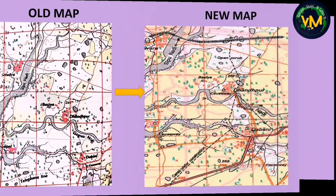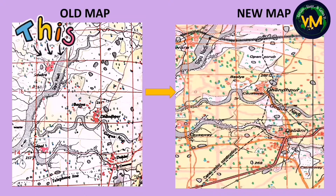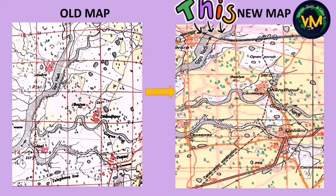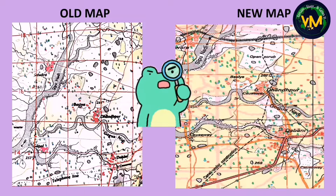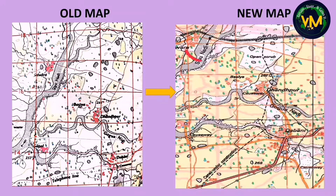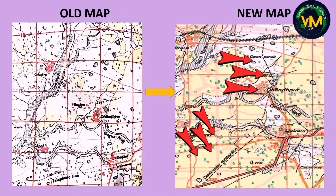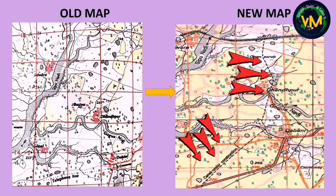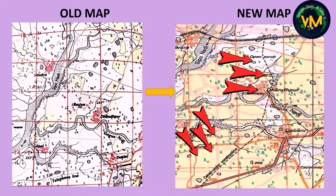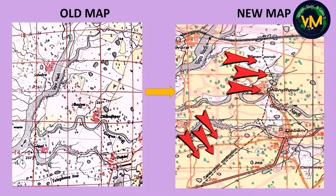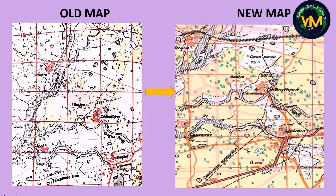This is an old map showing Sipunadi and this is a new topographical map showing Sipunadi. On a comparative study, we can observe that in the new map, across the Sipunadi, they have constructed an embankment to store the water. We can also see a canal under construction represented by black broken lines, showing how the water of Sipunadi is being used for irrigation through these canals.